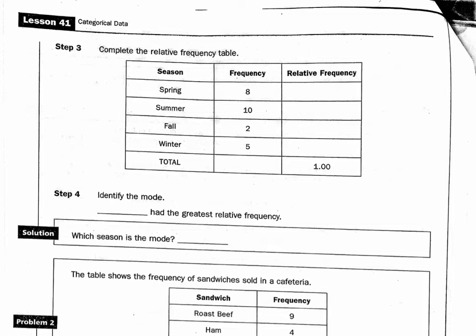We're going to complete the relative frequency table using that previous information. So here our total is 25 and here we've already proven that it equals one. Spring is 0.32 or 32 hundredths, summer is 4 tenths, fall is 8 hundredths, and then winter is 2 tenths or it could be 20 hundredths. Identify the mode. Which one had the most? Well, I think if you look at it you would see that summer is it.